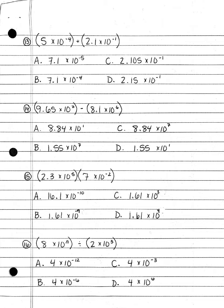Number 15. 2.3 times 10 to the fifth power times 7 times 10 to the negative second power: A. 16.1 times 10 to the tenth power; B. 1.61 times 10 to the negative ninth power; C. 1.61 times 10 to the third power; or D. 1.61 times 10 to the fourth power.